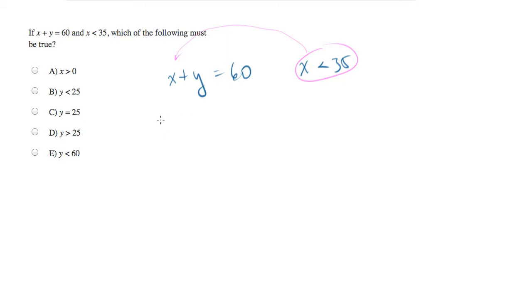What I suggest that you plug in is less than 35. And I'm going to think of this as a number, a number which is less than 35, and I'm plugging that in for x. Then I'm going to just do the rest of the equation, plus y equals 60.